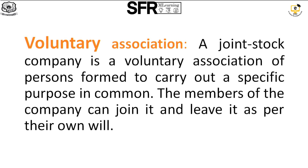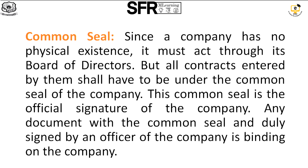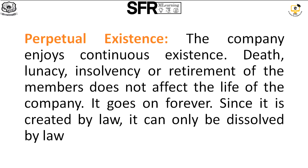The next characteristic of a joint stock company is voluntary association. A joint stock company is a voluntary association of persons formed to carry out a specific purpose in common. The members of the company can join it and leave it as per their own will. The next characteristic is common seal. Since the company has no physical existence, it must act through its board of directors. All contracts entered by them shall have to be under the common seal of the company. This common seal is the official signature of the company. Any document with a common seal and duly signed by an officer of the company is binding on the company.